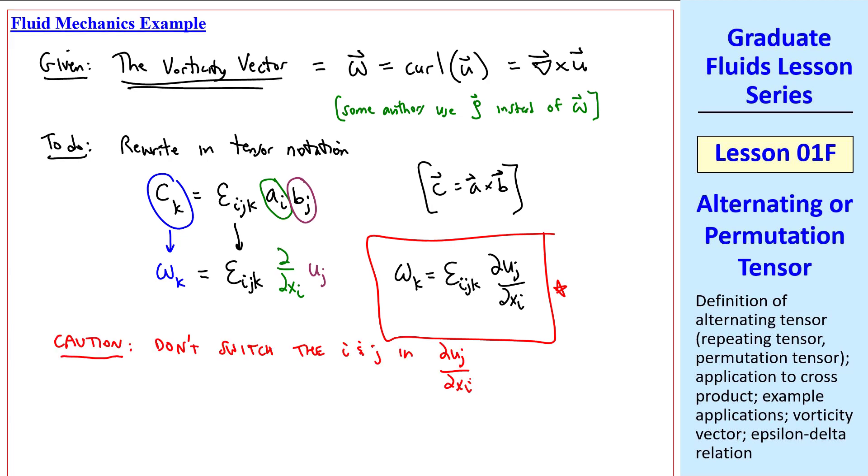Here's a caution. Don't switch the i and j in this term, del u_j/del x_i. I've been teaching this material for almost 40 years, and students will often write del u_i/del x_j here, remembering that cross product has A_i B_j. But here, vector a is the gradient operator del/del x_i, and vector b is our u_j. If you switch the i and the j, it won't be equal to the vorticity. When we see an expression like this, keep in mind that this means the components of vorticity vector. But when you get used to using tensor notation, you'll recognize this as a cross product.